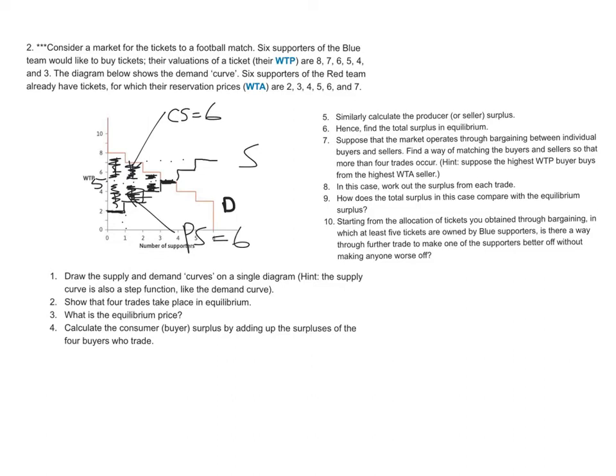And total surplus. I'm going to just write it down here. Total surplus is consumer surplus plus producer surplus, which is equal to 12. Six plus six is 12.